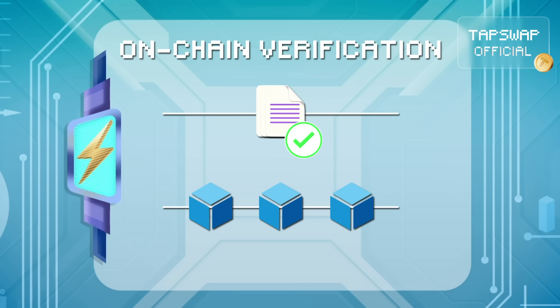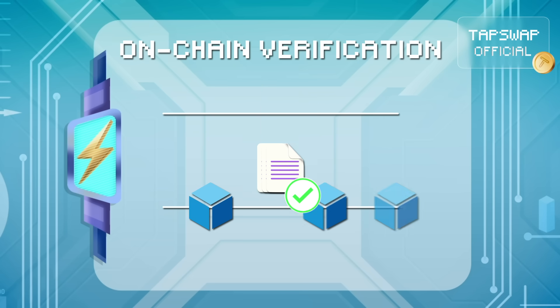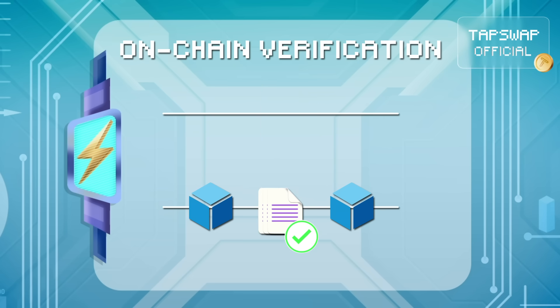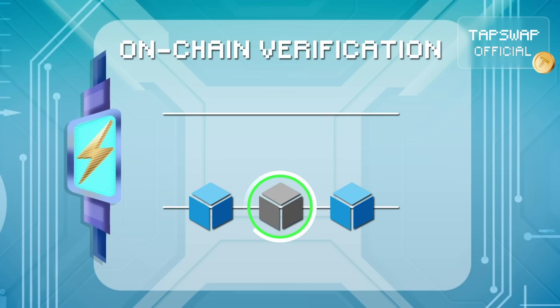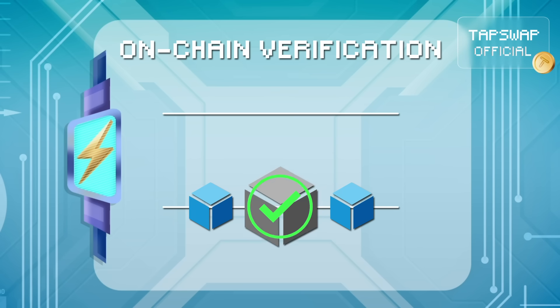The validity proof is sent to the layer 1 blockchain. The on-chain verifier contract checks the proof. If the proof is valid, the blockchain updates its state to reflect the transactions.